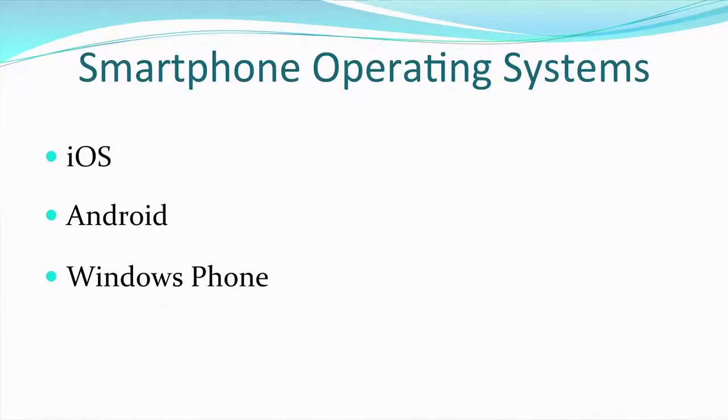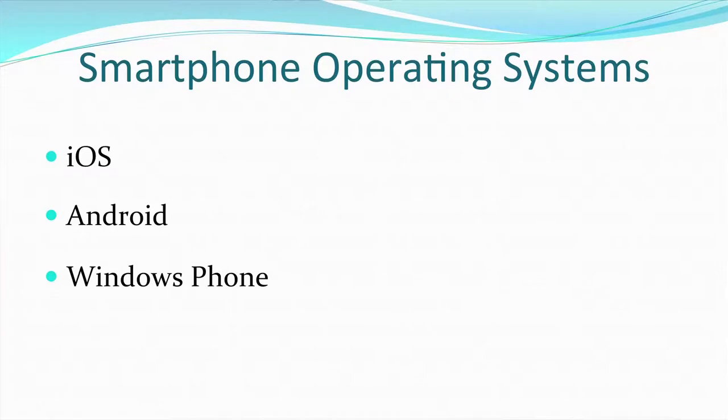Next we move on to smartphone operating systems. These days we are quite familiar with smartphone operating systems. A smartphone is one that has internet facility along with other capabilities. Three types of smartphone operating systems are discussed here: iOS, Android, and Windows Phone.